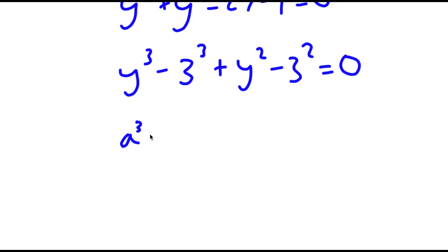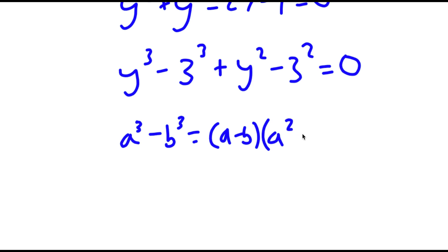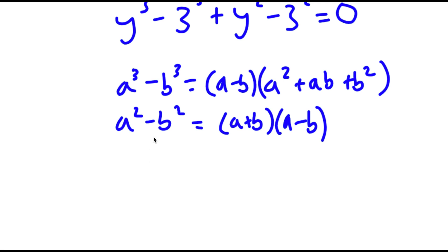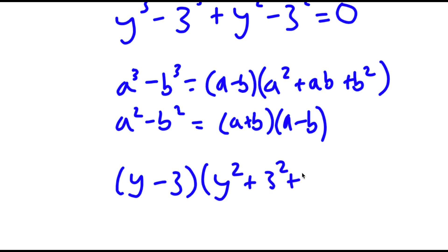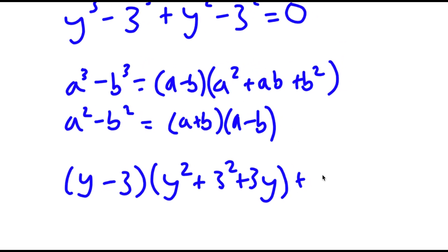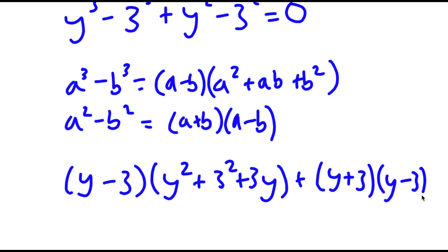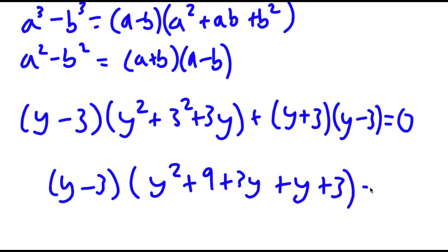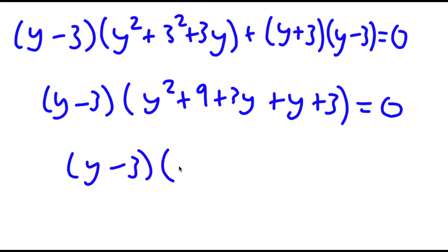Using the difference of cubes formula, a cubed minus b cubed equals a minus b times a squared plus ab plus b squared, and the difference of squares formula a squared minus b squared equals a plus b times a minus b, I can rewrite y cubed minus 3 cubed as y minus 3 times y squared plus 3y plus 9, and y squared minus 3 squared as y plus 3 times y minus 3. Factoring out y minus 3, I get y minus 3 times y squared plus 4y plus 12 is equal to 0.